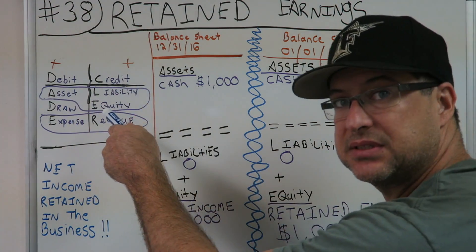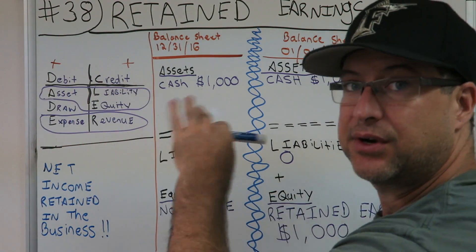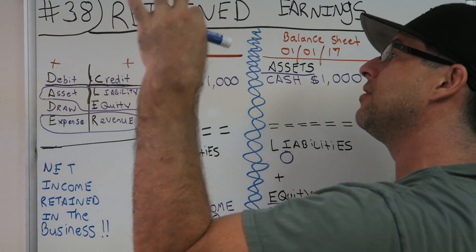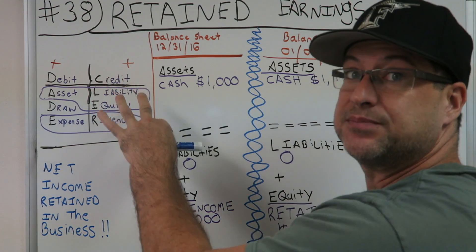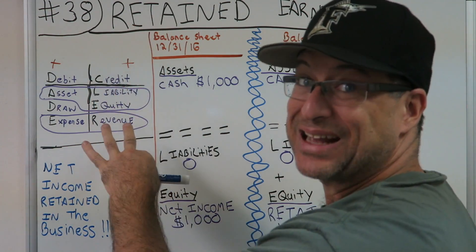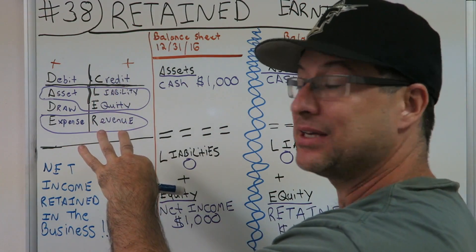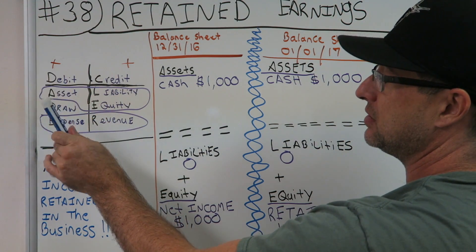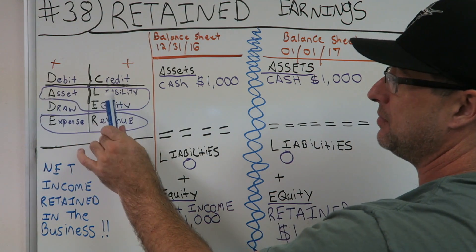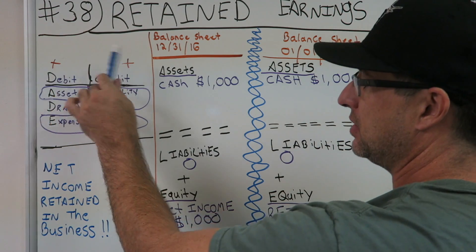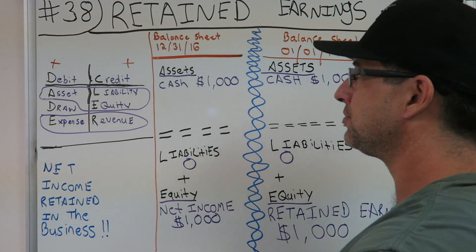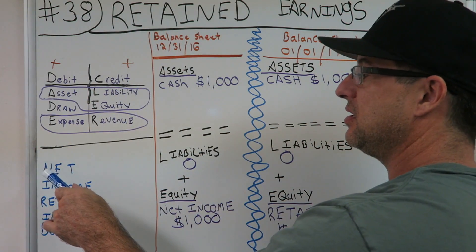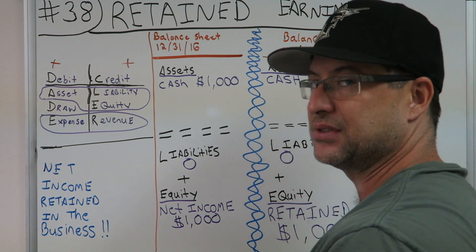This is also my mapping system — DCA BLUR. If you don't know it, go back and look it up. It's helped thousands of people pass their accounting classes. DCA BLUR stands for: Debit, Credit, Asset, Draw, Expense, Liability, Equity, Revenue — in their positive forms.